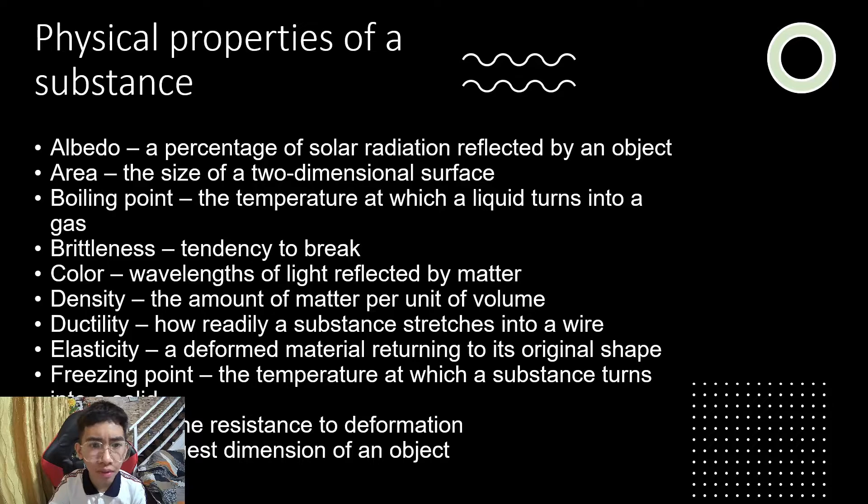The physical properties of a substance are: Albedo, a percentage of solar radiation reflected by an object; Area, the size of a two-dimensional surface; Boiling point, the temperature at which a liquid turns into a gas; Brittleness, the tendency to break; Color, the wavelengths of light reflected by matter.